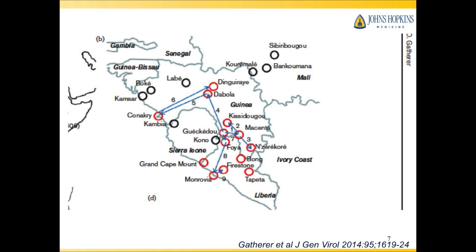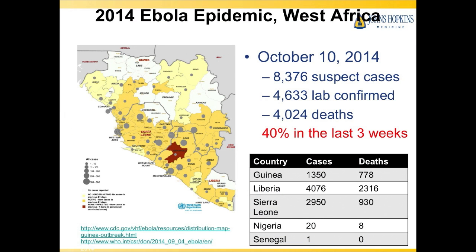To date — and these numbers are changing all the time — there are thought to be over 8,000 suspect cases. Almost half or a little bit more have been confirmed, and about 4,000 deaths. The country most affected is Liberia, but there are also significant cases in both Sierra Leone and Guinea. Most importantly, most of these cases have really occurred in the last three to four weeks, and the burden of this particular outbreak is increasing.